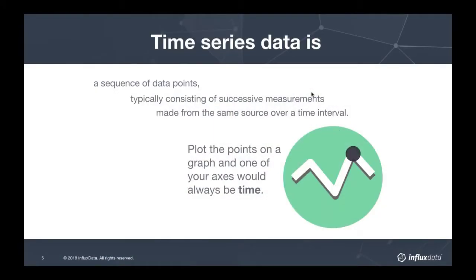Time series data is simply a timestamp with a value. You track values like CPU resource consumption, disk space, or machine performance at successive points in time — at minute or second intervals, for example. This lets you understand what action to take with your devices to be efficient or avoid disasters. When plotted on a graph, one axis is always time — that's the most basic definition of time series data.